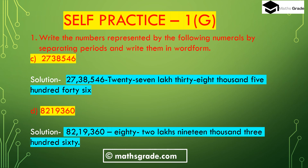Part (c): the number is 2738546. We have to write the numbers using periods and in word form. In the Indian system of numeration, we place 3 digits in the hundreds place — so 546, then comma — then 38 in the thousands place (2 digits), then comma, then 27 in the lakh place. So in word form it will be 27 lakh 38,546.